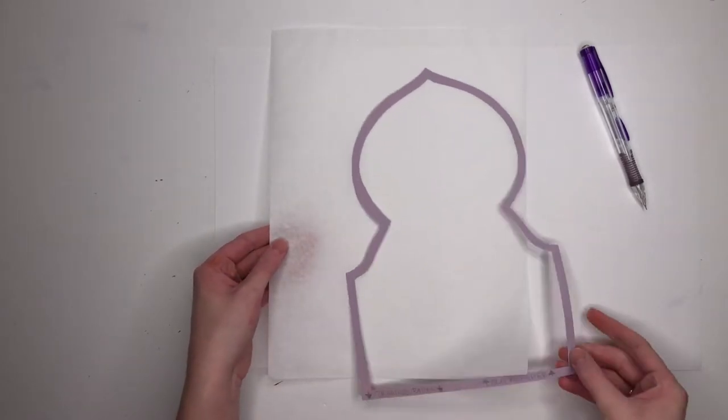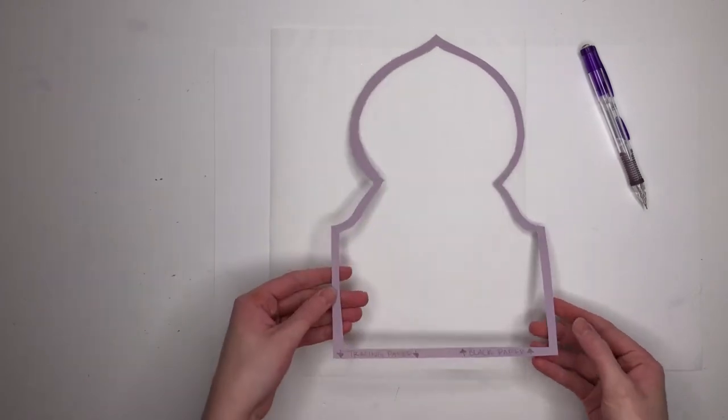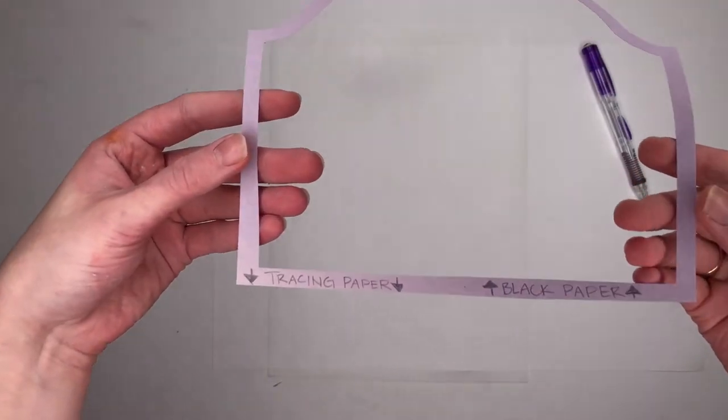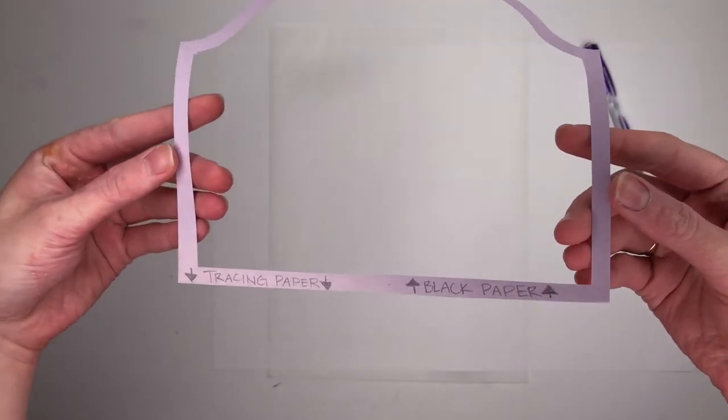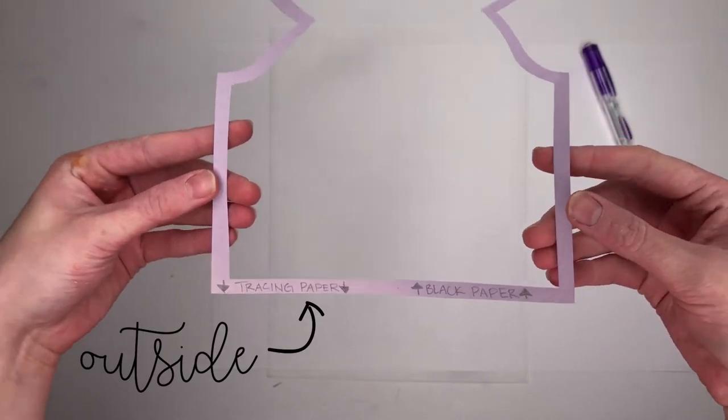For your first step, you need a stencil and a sheet of tracing paper. Make sure for the tracing paper you're tracing the outside of the stencil. We'll use the inside later.